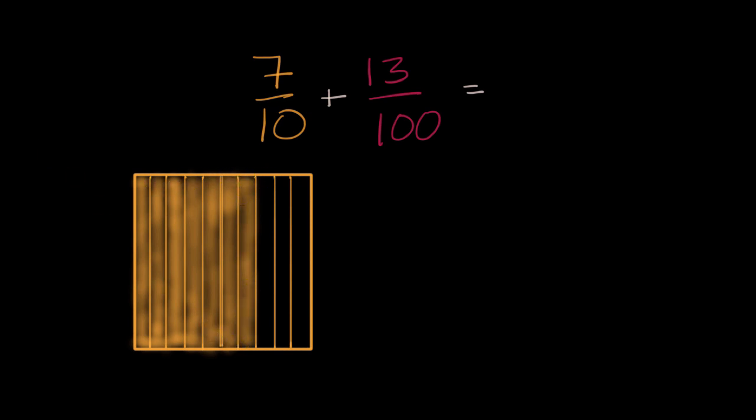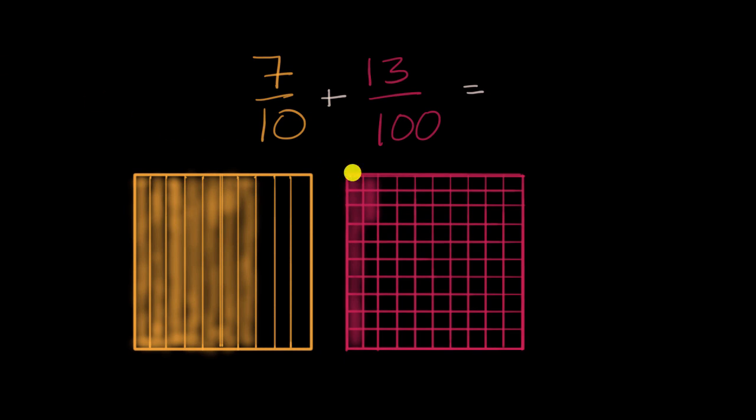And 13 hundredths, you could split the whole into 100 equal sections, and I tried to hand draw it, so assume that these are 100 equal sections. And so notice this is a 10 by 10 square, and so you're gonna have 100 of these squares. And notice we have 10 plus three, 13 filled in. So we wanna add these seven-tenths to these 13 hundredths.